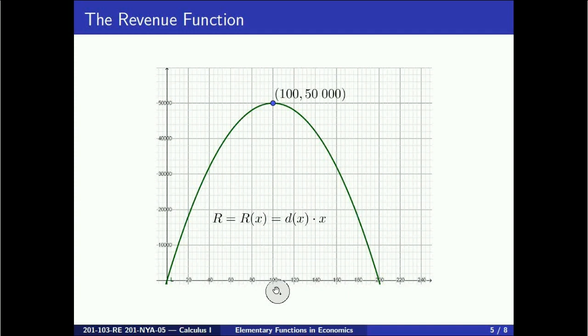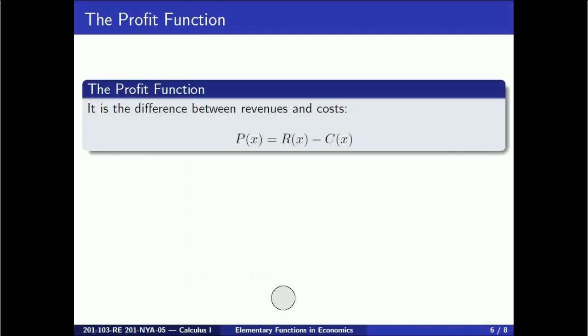Note that we do not want to produce as many units as possible in order to maximize revenues, since in that case too many goods available on the market will lower down its price, and we may end up with less revenues overall, even if we sold more goods.